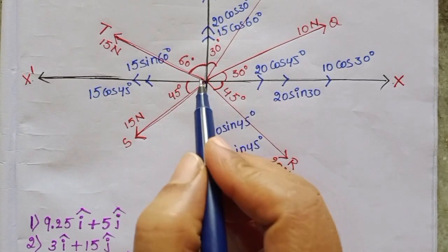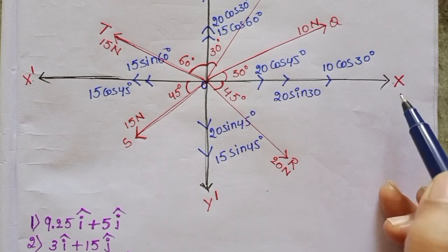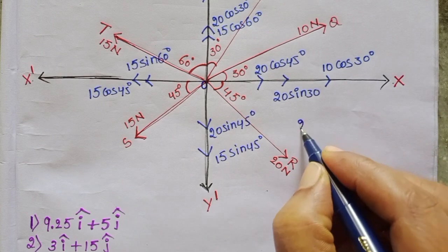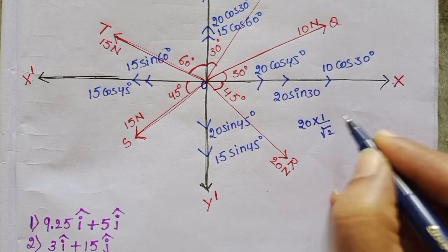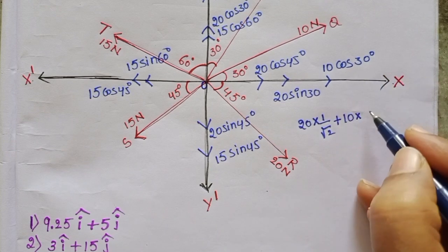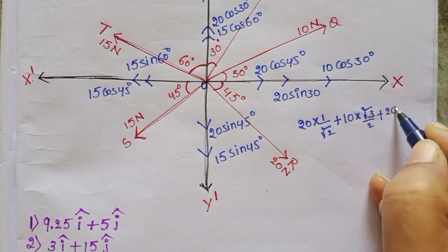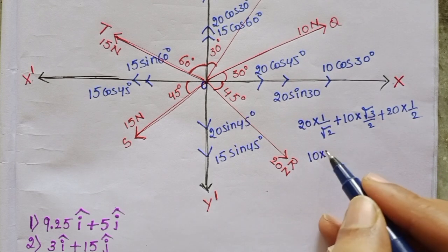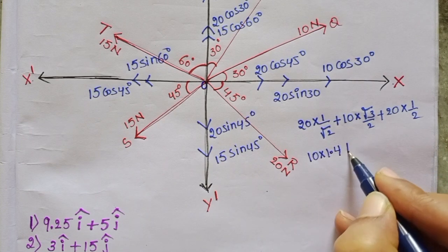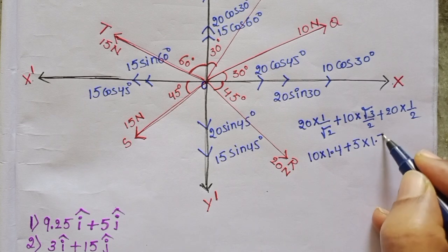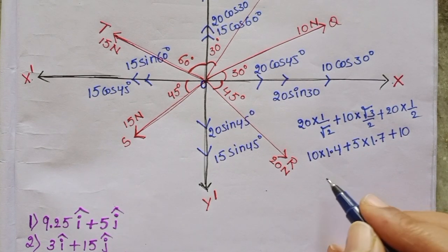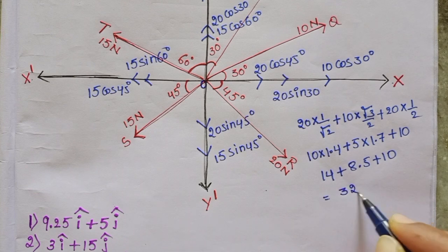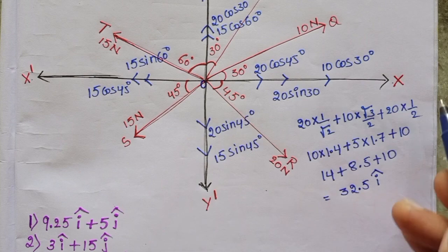To find out the resultant of all these forces, first simplify the components. Along the positive x direction: 20 cos 35 plus 20 sin 30 plus 10 cos 30. The value of 20 cos 45 is 1 over root 2, 10 cos 30 is root 3 over 2, and 20 sin 30 is 1 over 2. So 20 over 2 root 2 gives 10 root 2, which is 14, plus 8.5 plus 10, giving 32.5 i-cap along positive x direction.